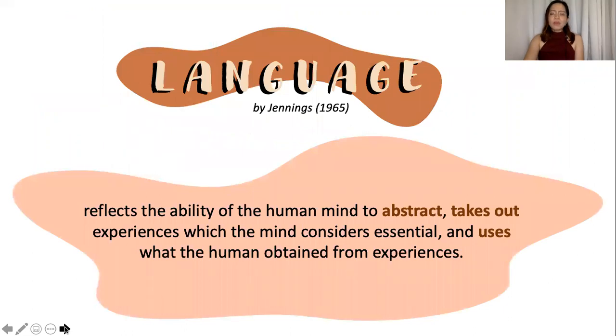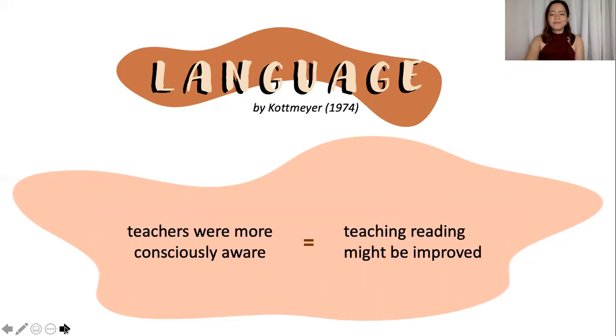So, going back, language is very important to reading. Yes or no? Yes. Jennings, in 1965, says that language reflects the ability of the human mind to abstract, takes out experiences which the mind considers essential, and uses what the humans obtain from that experience. In addition to that, Kotmeier, in 1974, agreed and added this: Teaching reading might be improved if teachers were more consciously aware of the origin and growth of language.